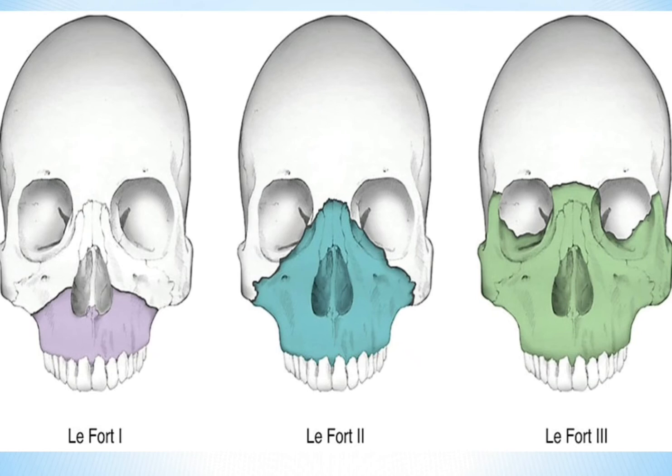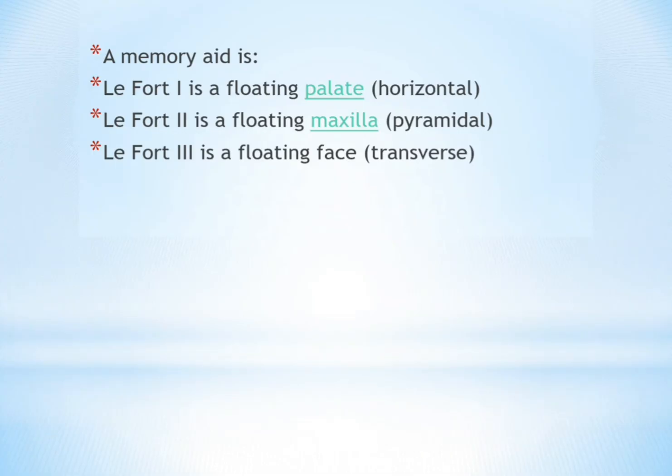The diagram shows Le Fort 1, Le Fort 2, and Le Fort 3. A memory aid for remembering the types: Le Fort 1 is a floating palate — horizontal. Le Fort 2 is a floating maxilla — pyramidal fracture. Le Fort 3 is a floating face — transverse fracture.